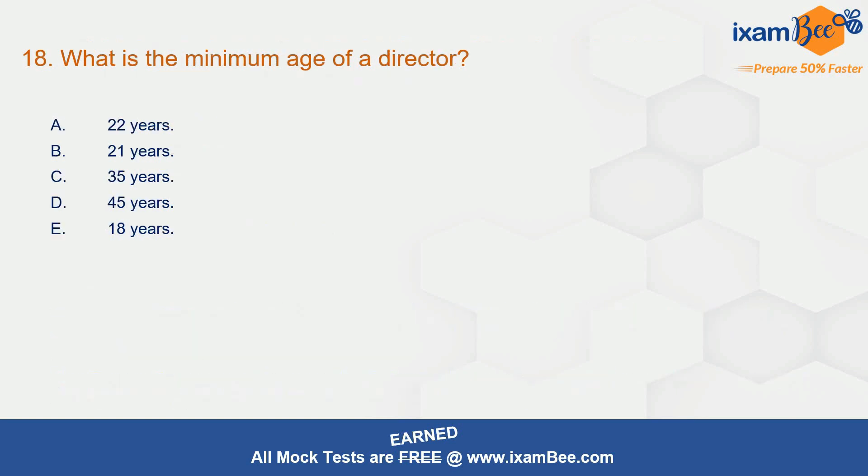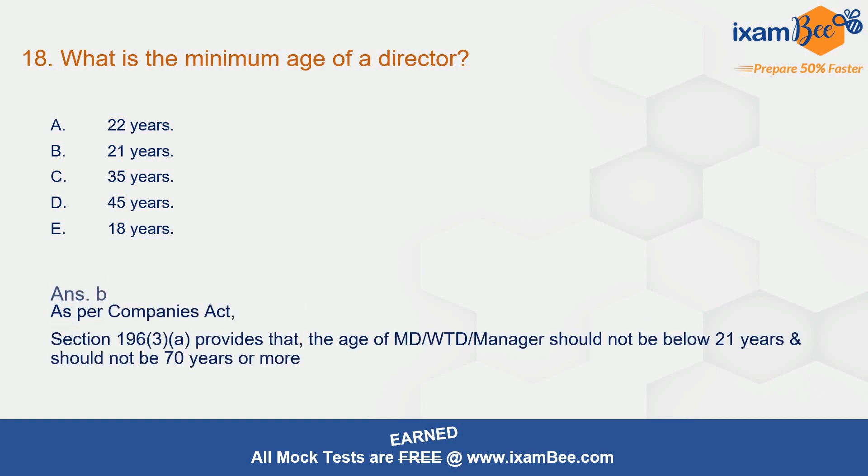Question 18: what is the minimum age of a director? The correct answer is B — 21 years. In order to become a director, the minimum age is 21 and the maximum age is 70.